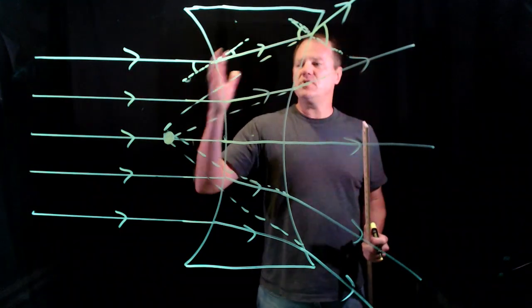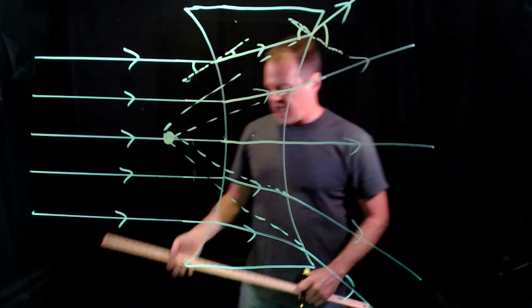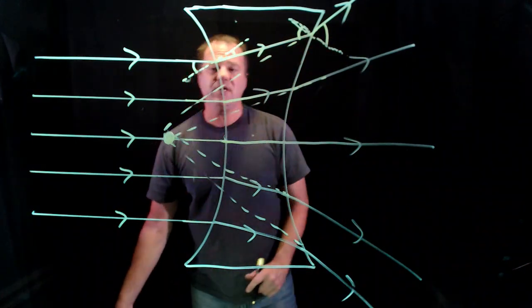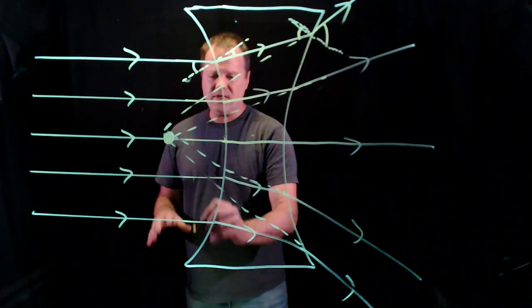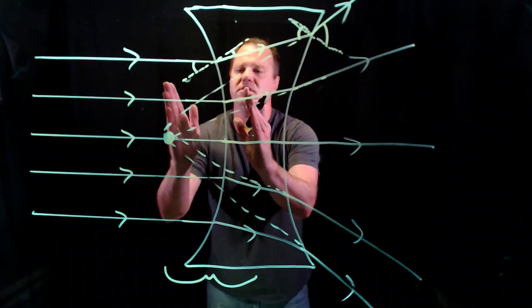That point is called the focal point. And then the distance between the center of the lens and that point, this distance here, would be called the focal length, and we use the symbol F.